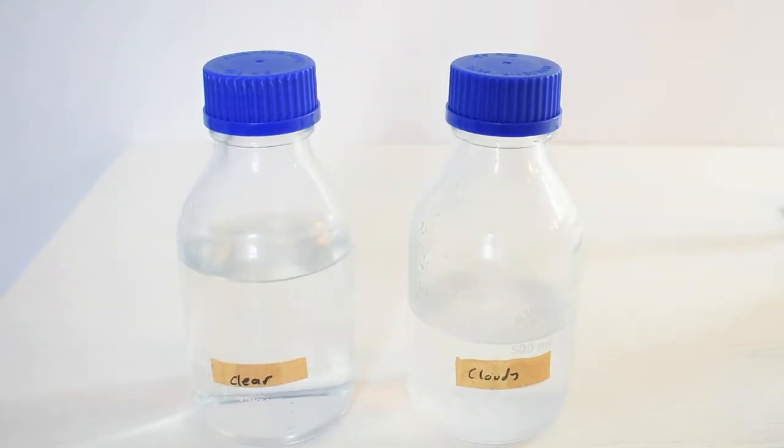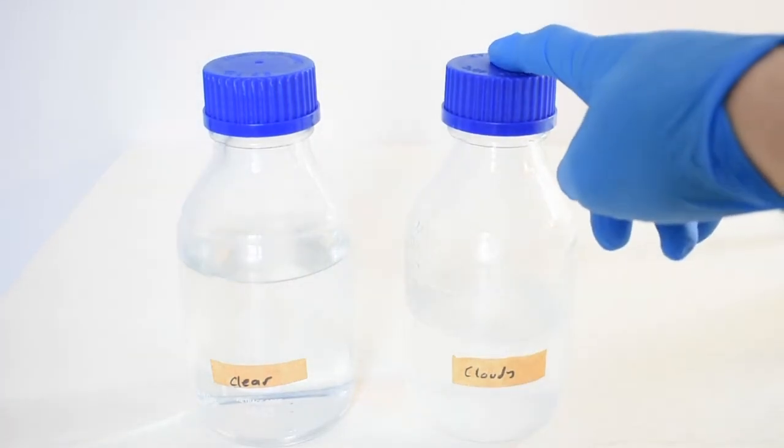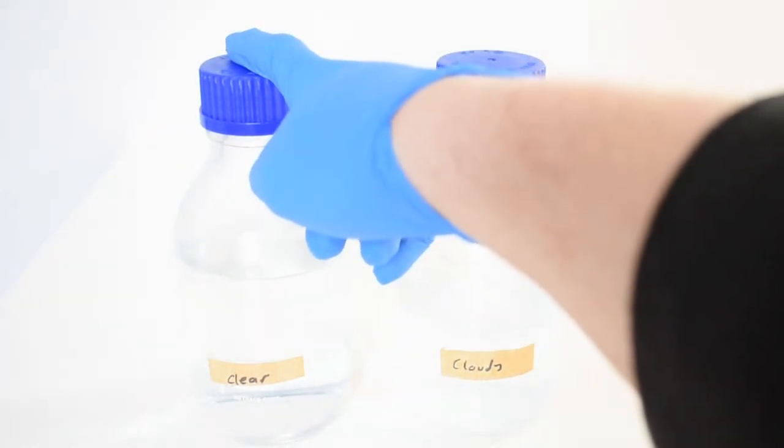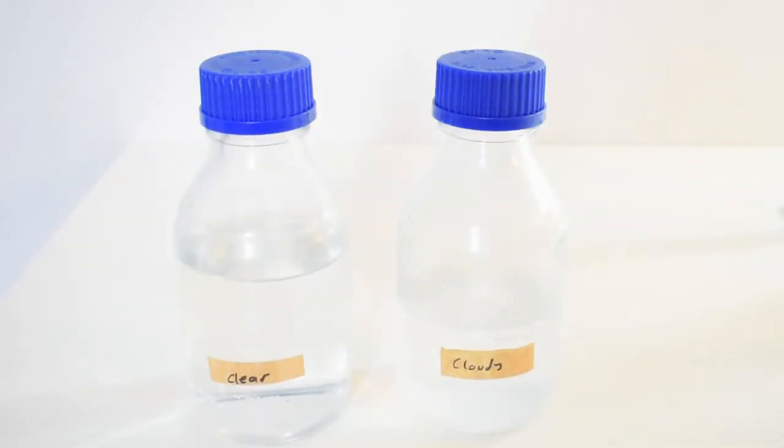At this point, I have two bottles of distillate. This one is the cloudy distillate which came over first in each of the runs, and this one is the second clearer distillate which has less oil.